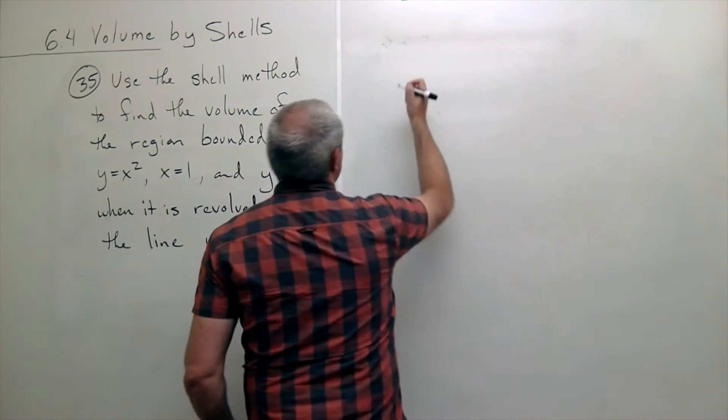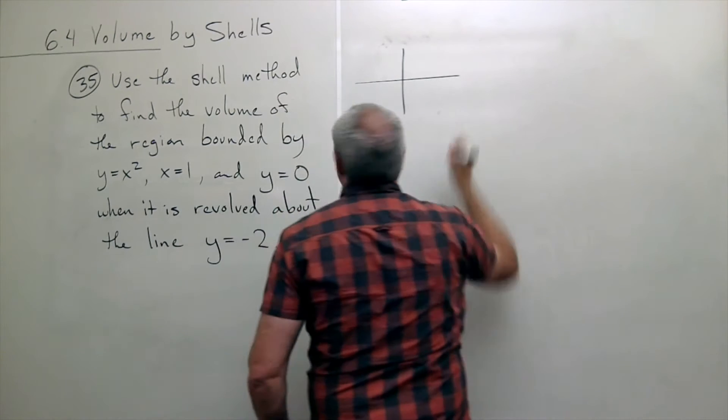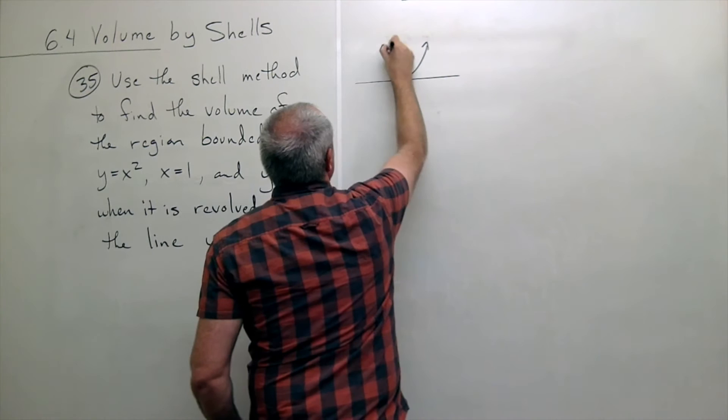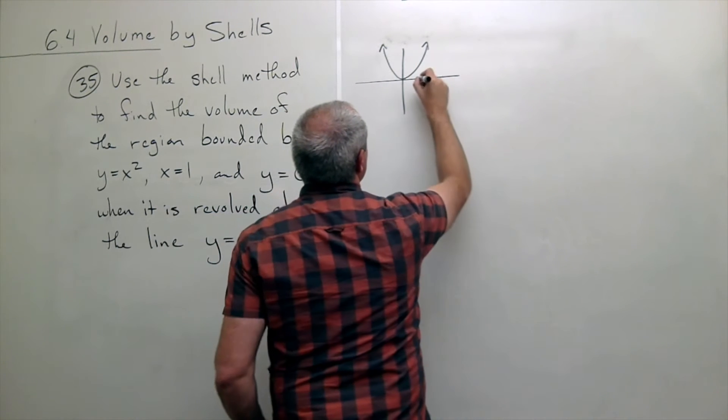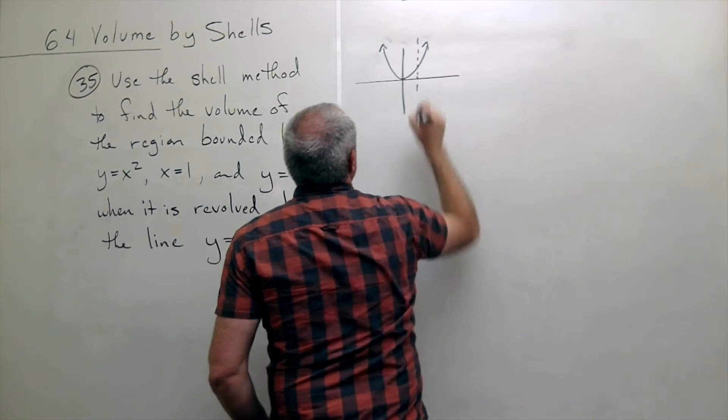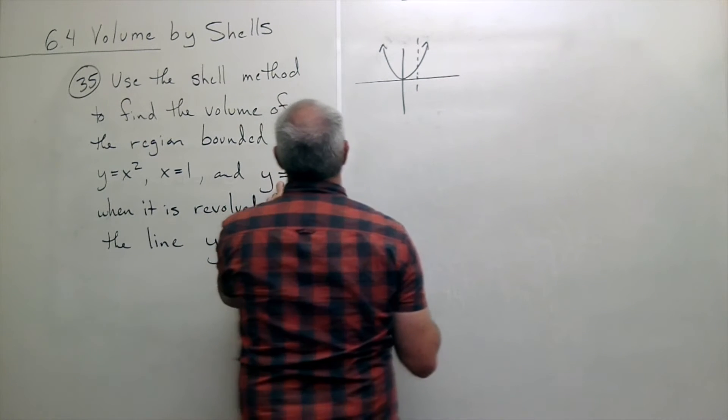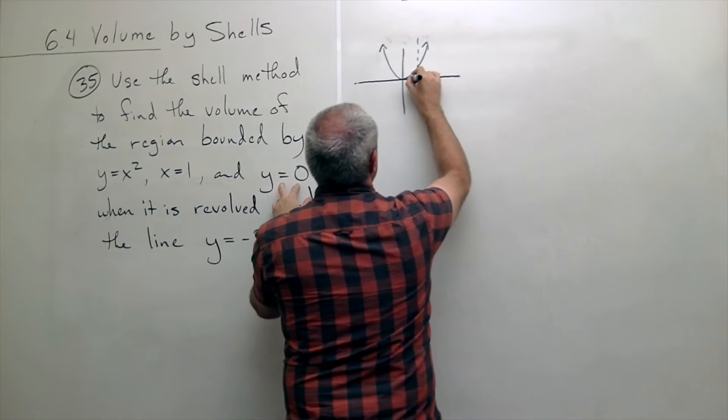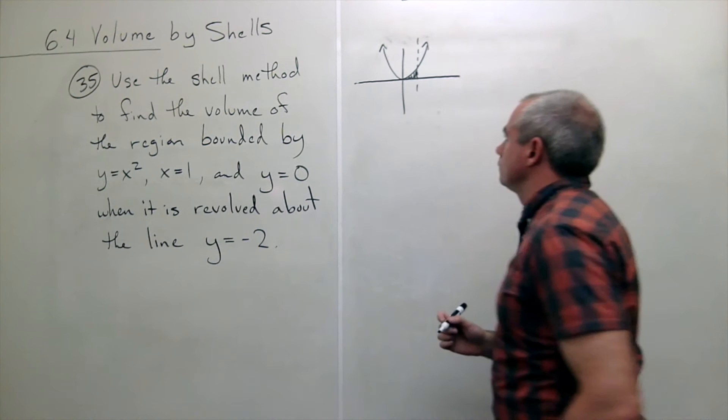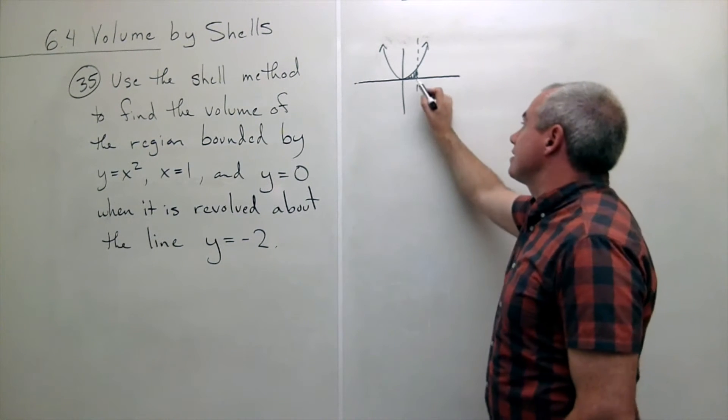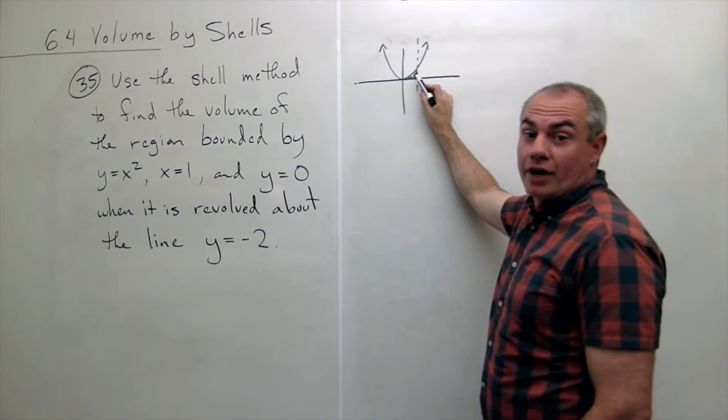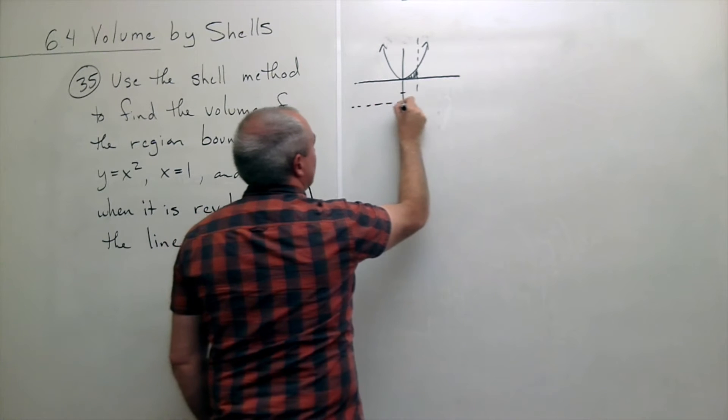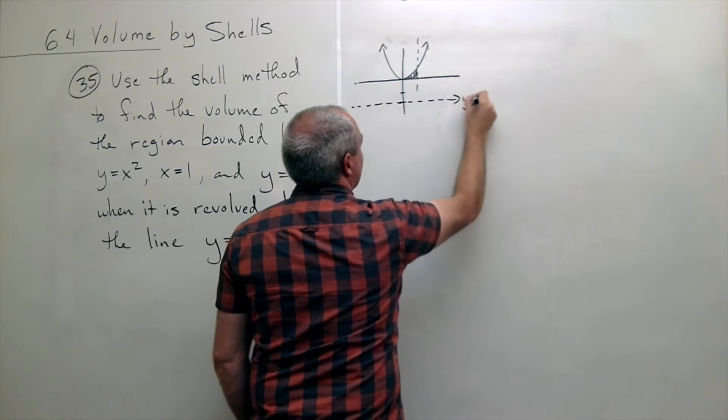Let's draw our region. Our region is y equals x squared. We've got x is equal to 1, and we've got y is equal to 0, which is otherwise known as the x-axis. So we've got this little piece right here. Now that little piece is going to be revolved around the line y equals negative 2, which is this.